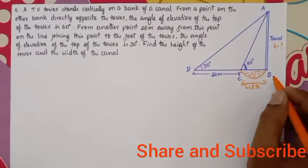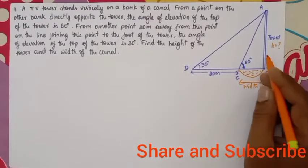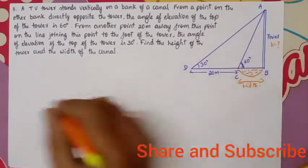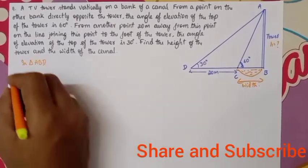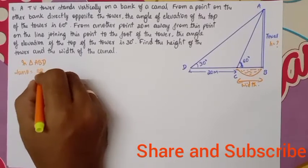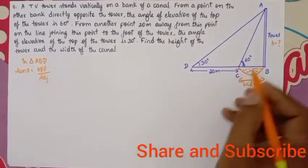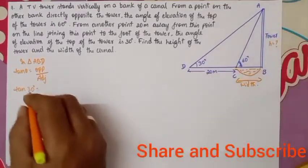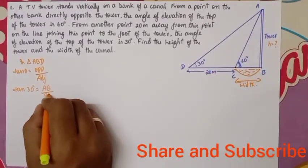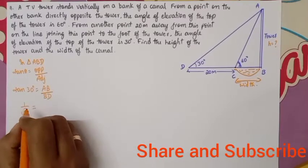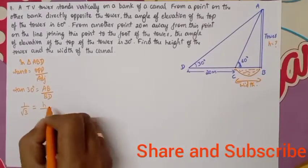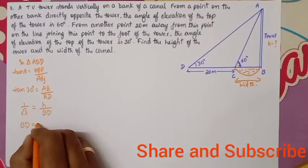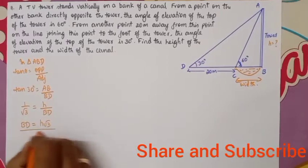In triangle ABD, I will use tan θ = opposite by adjacent. Here θ is 30 degrees. Tan 30° = AB / BD, so 1/√3 = h / BD. Upon cross multiplication, BD = h√3. Let me use this further.